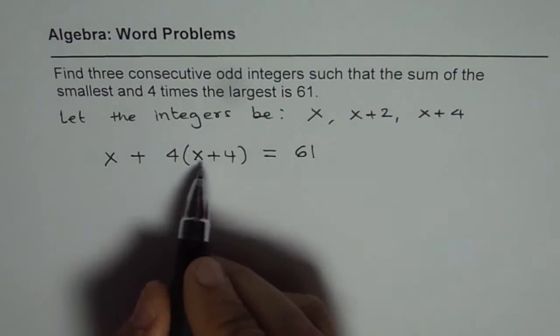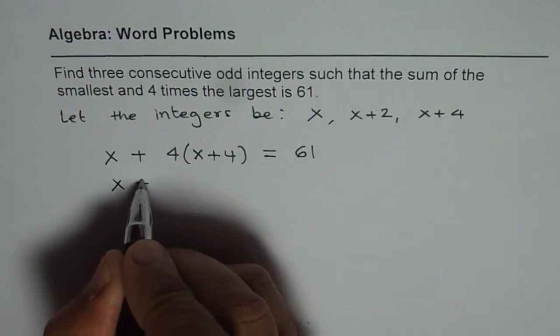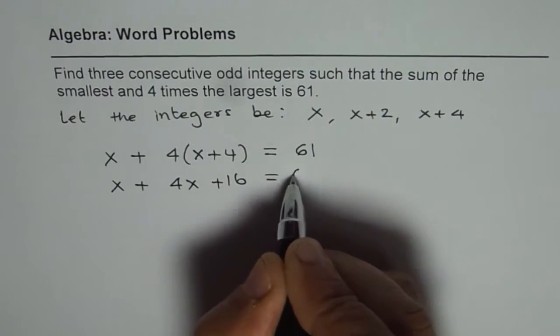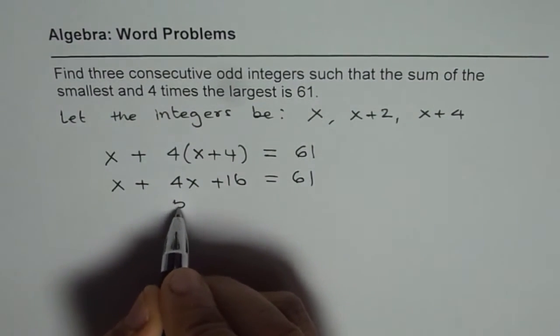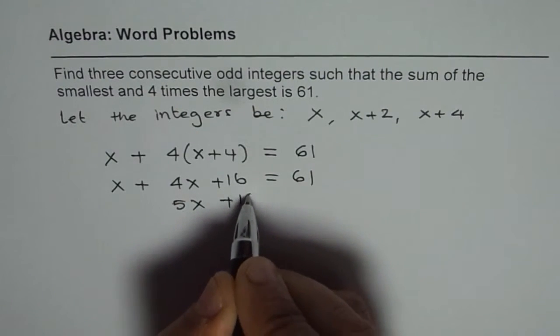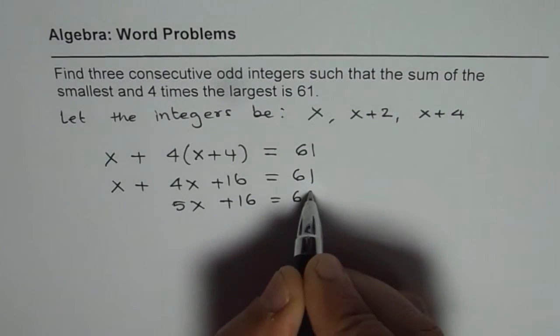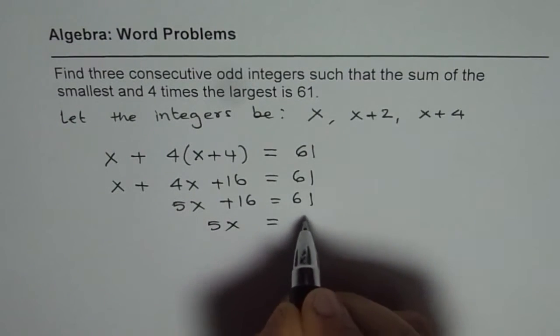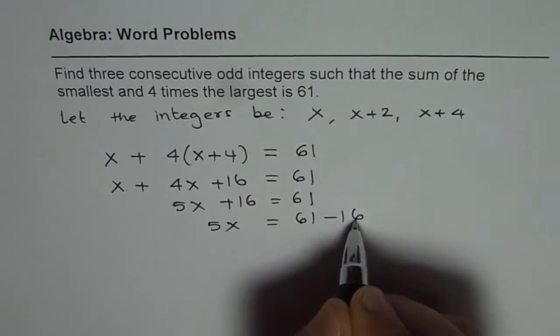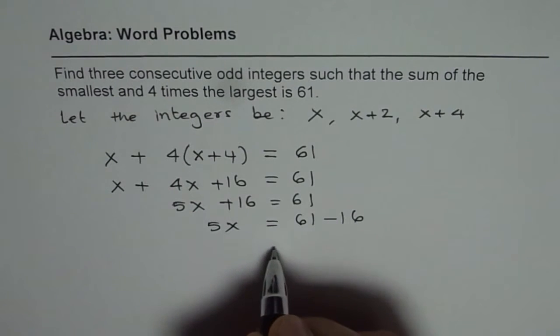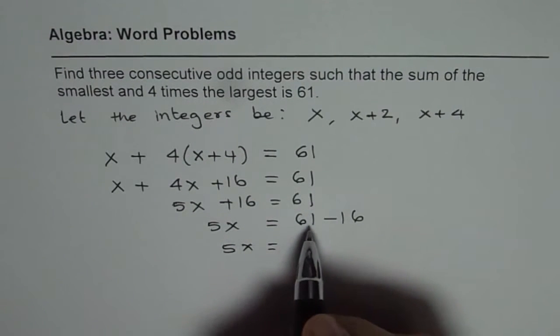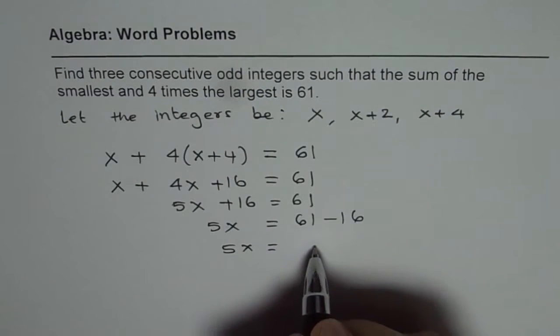So we can apply the distributive property, expand and simplify. We get x + 4x + 16 = 61. 4x plus x is 5x plus 16 equals 61. We can subtract 16 from both sides. 5x equals 61 minus 16. So we get 5x is equal to 45.